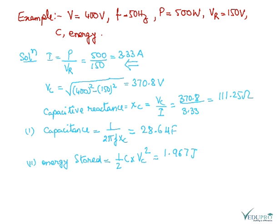The capacitive reactance XC is equal to VC upon I. And we know that XC is equal to one upon two pi f C. So using this relation, we have calculated capacitance.